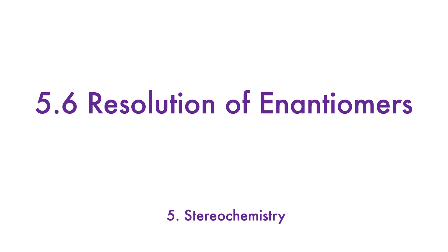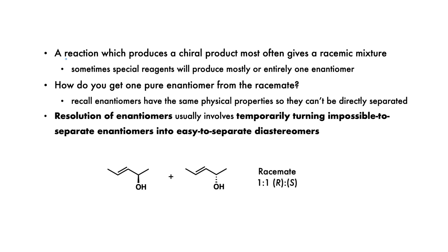Let's talk about the resolution — that is, the separation of enantiomers. Most often, a reaction which produces chiral products will give a racemate, that is, a one-to-one mixture of enantiomers. We discussed why this is the case in Section 5.3b.